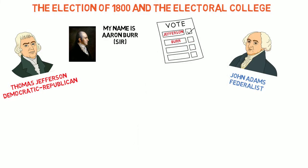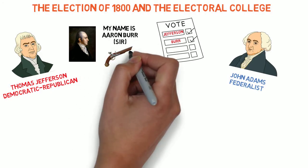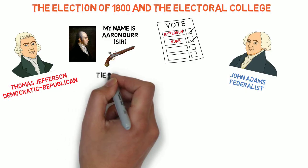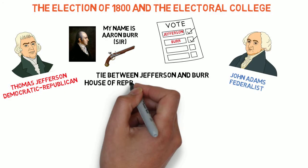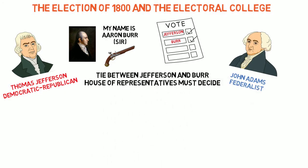In the election of 1800, this resulted in a tie between the two Democratic-Republican candidates, Thomas Jefferson and Aaron Burr — yes, that Aaron Burr, the guy who shot Hamilton. In the case of a tie, or if there is no clear majority winner, the House of Representatives, which at that time was still controlled by the Federalist Party, must decide who will be president.